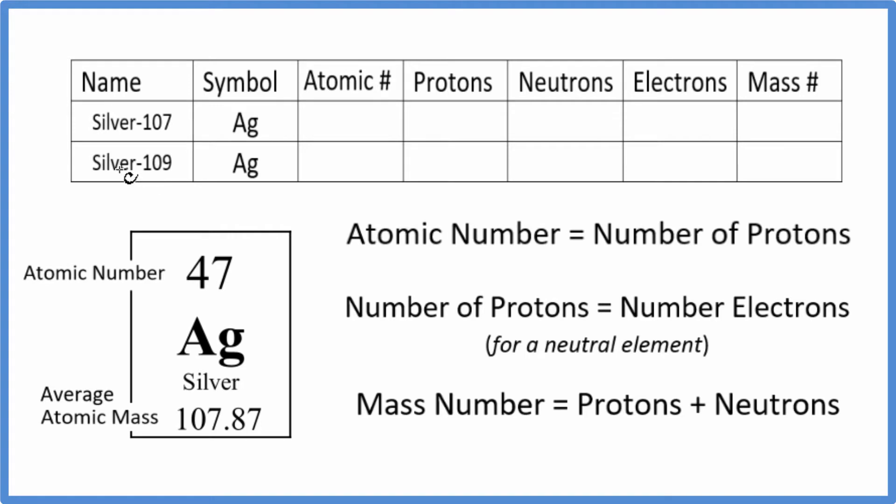We'll talk about isotopes later. The only thing that's different between isotopes of an element like silver is the number of neutrons. Because of that, the mass number too. Everything else is going to be the same.